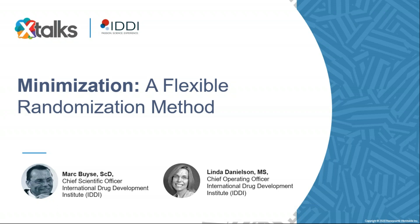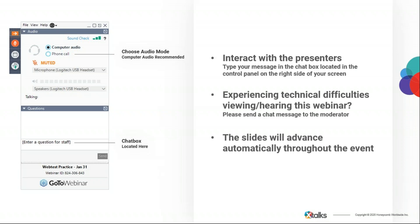Good day to everyone joining us, and welcome to today's Xtalks webinar. Today's talk is entitled Minimization, a Flexible Randomization Method. My name is Sonia Hunt, and it's my pleasure to be your Xtalks moderator for today. Today's webinar will run for approximately 60 minutes and includes a Q&A session with our speakers. This webinar is designed to be interactive, so please feel free to submit questions and comments throughout the presentation using the questions chat box, and we'll try to attend to your questions during the Q&A session.